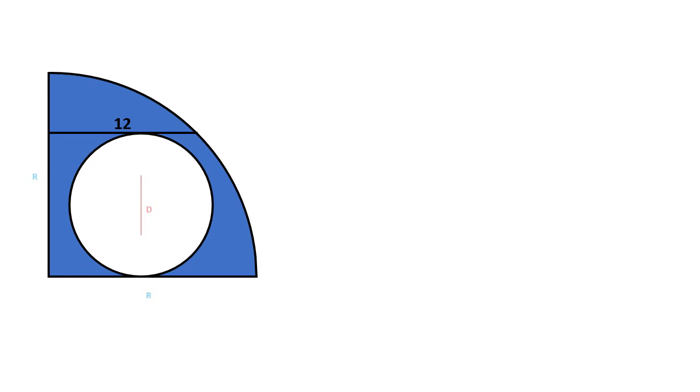We denote the radius of the quarter circle with r and the diameter of the inner circle with d. The blue area will be equal to the area of the quarter circle, which is pi multiplied by one fourth of r squared, from which we subtract the area of the inner circle, which will be pi multiplied by one fourth of d squared.